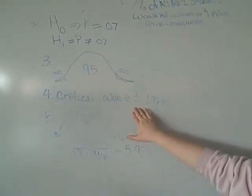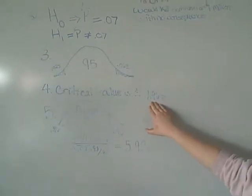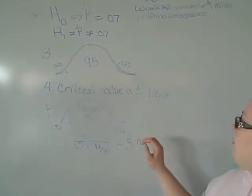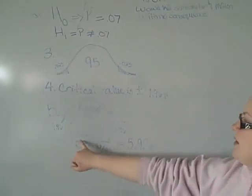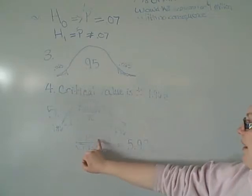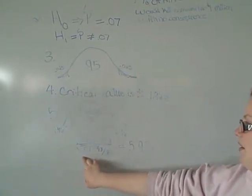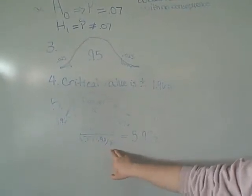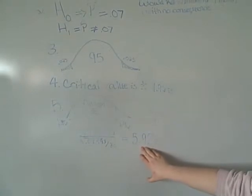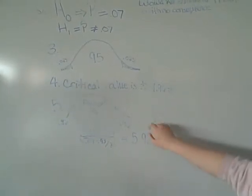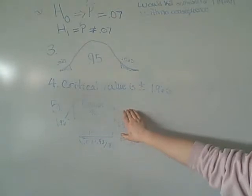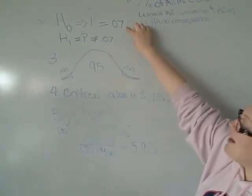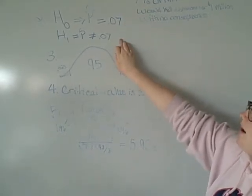Our critical value is plus or minus 1.96, which is found on our z-score chart. Then we do the math of .575 minus .07, divided by the square root of .07 times .93, divided by the square root of 80, which is equal to a z-score of 5.92. When we put that on the chart, it is outside of the accepted area, so we reject H sub 0 and accept the alternative hypothesis.